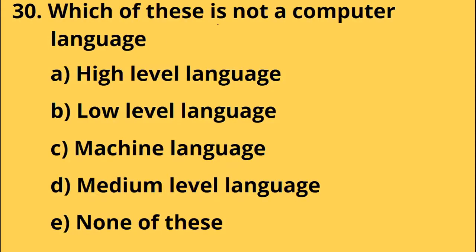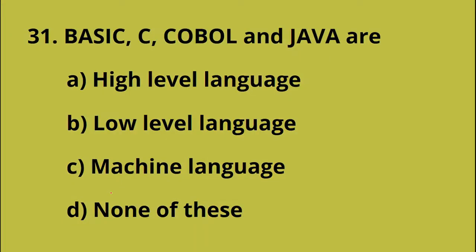Which of these is not a computer language? Computer languages include high level, low level, machine, and medium. Option E — none of these. Basic, C, COBOL, and Java are high level languages. Option A — high level language.